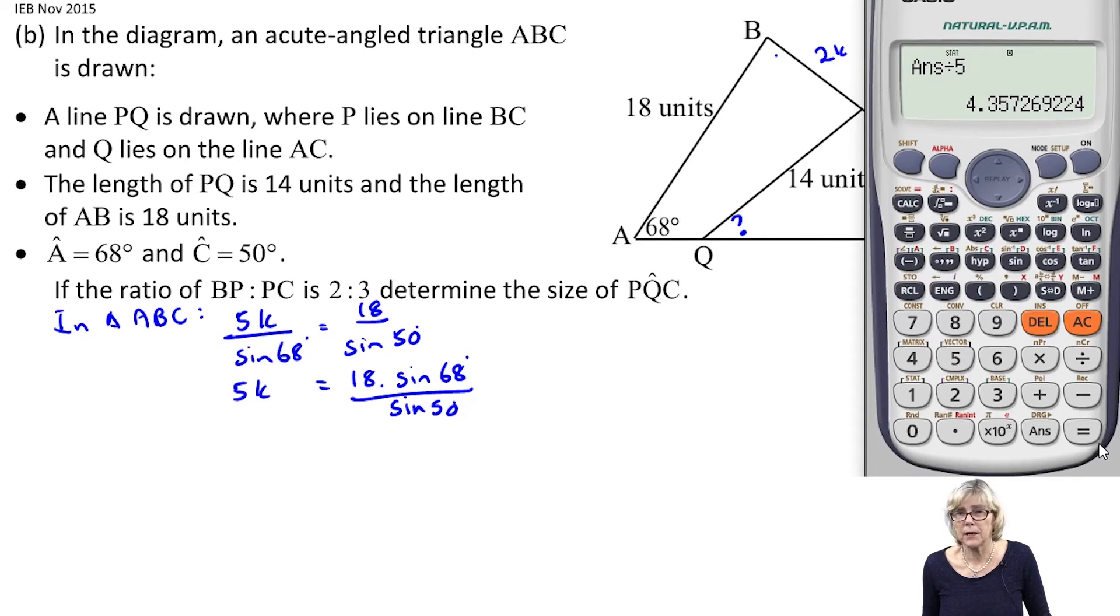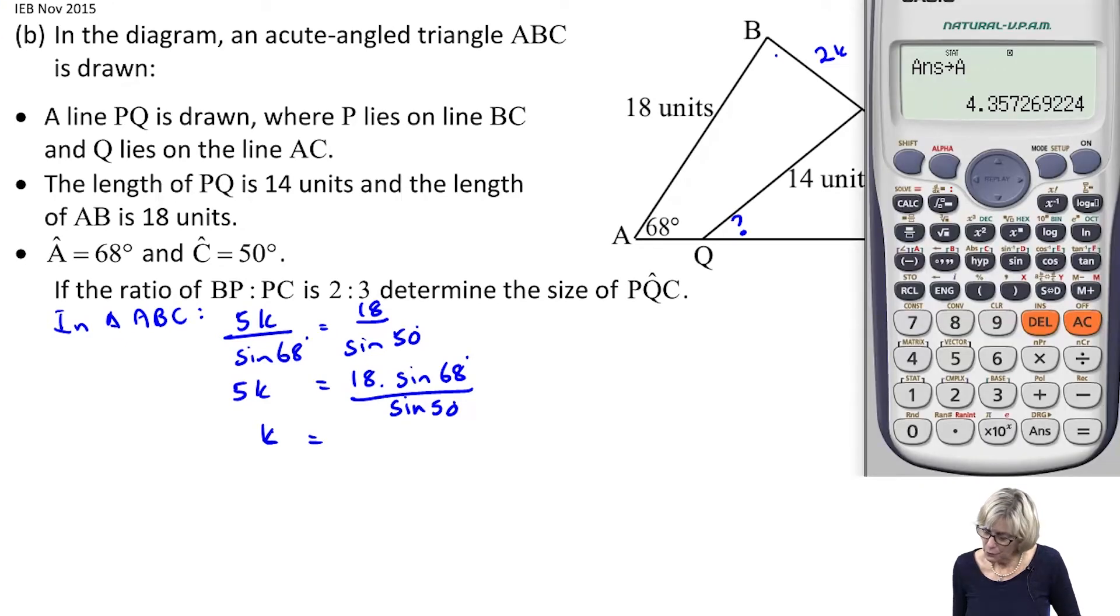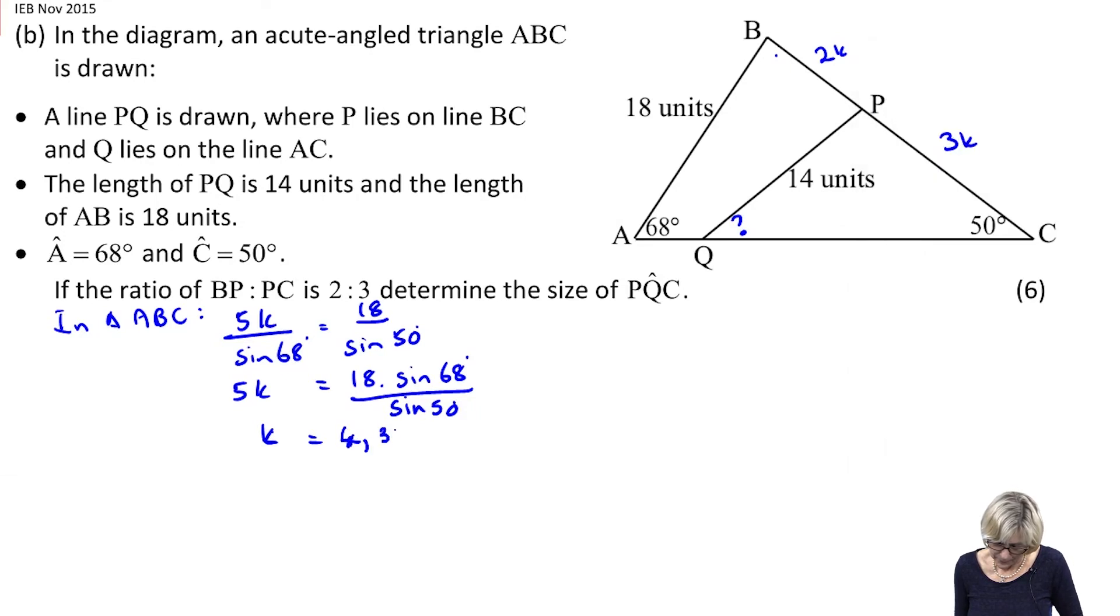I found k and guess what I'm going to do straight away—I'm going to store that whole decimal. It's better to use the whole decimal, so I'm going to press shift, store, and put it into A. So to two decimal places, k equals 4.36, and I've put that in A.